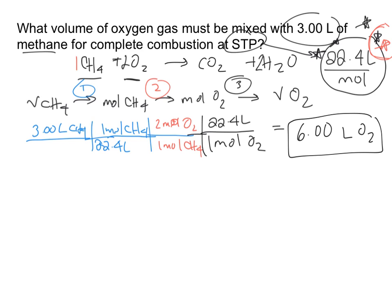Liters and liters cancel, moles and moles cancel, and you're left with liters of O2. Basically, in this approach, you could have done the conversions in steps 1 and 3 using PV = nRT and it would give you the same numerical values.